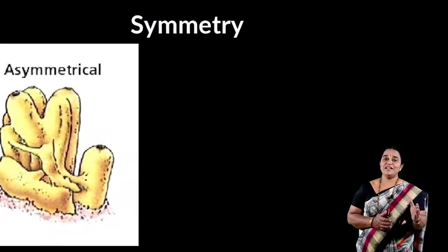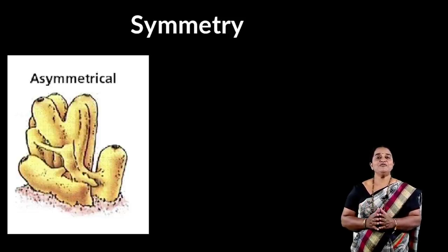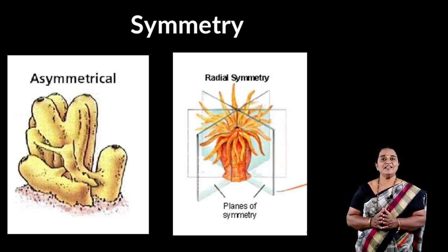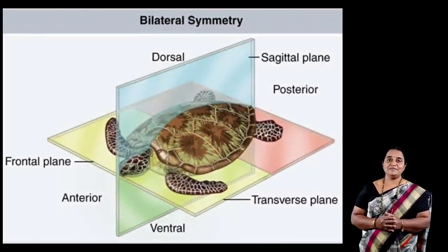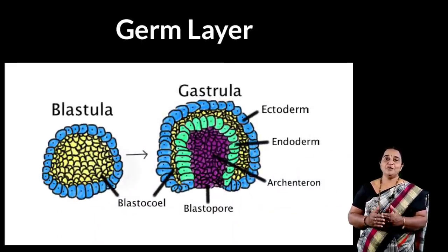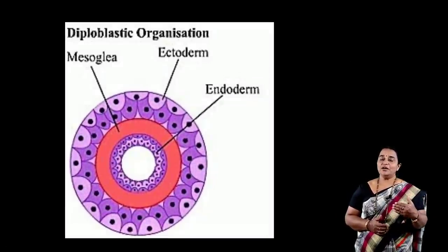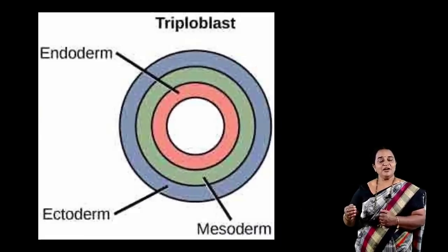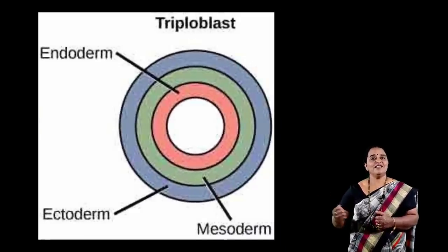Let us move to symmetry (Sammiti). Poriferans are asymmetrical. Coelenterates and ctenophorans are radially symmetrical. Flatworms and till chordata are bilaterally symmetrical. Regarding tissue grade of development, tissues are derived from germ layers of gastrula during embryogenesis. When tissue develops from ectoderm and endoderm, we call them diploblastic. When tissues develop from ectoderm, mesoderm, and endoderm, we call them triploblastic animals.